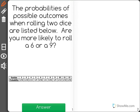The probabilities of possible outcomes when rolling two dice are listed below. Are you more likely to roll a 6 or a 9?